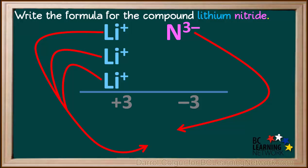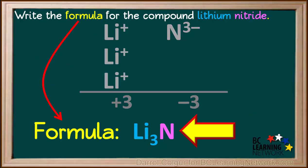There are three lithium ions to one nitride ion. So the formula is Li3N. So that answers our question. The formula for lithium nitride is Li3N.